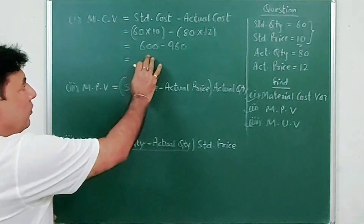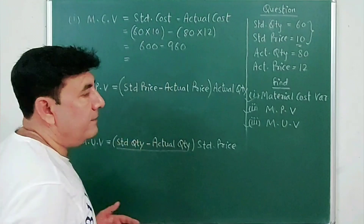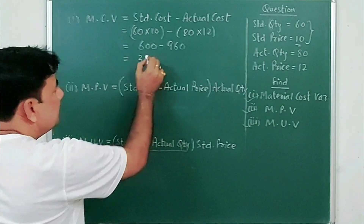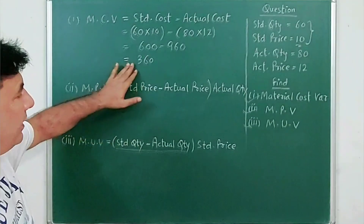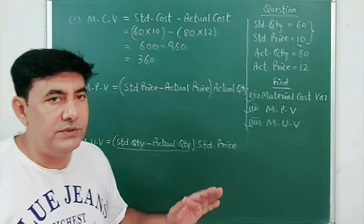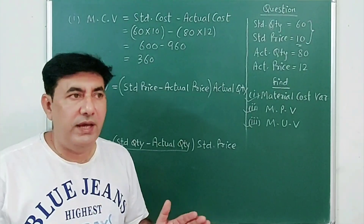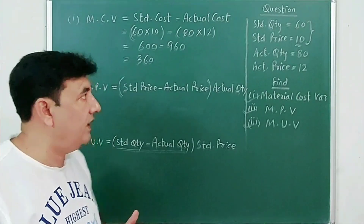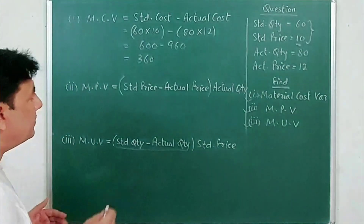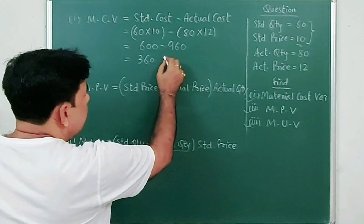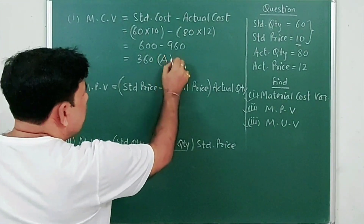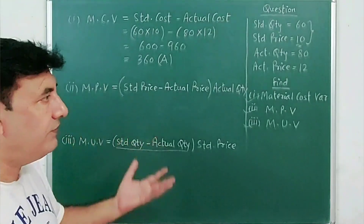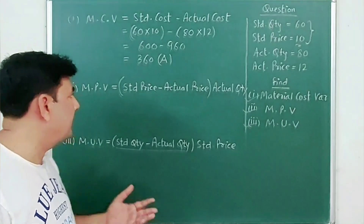The difference is 360. We don't use plus or minus signs with the algebraic method here. Instead, we write 'A' for adverse or unfavorable.